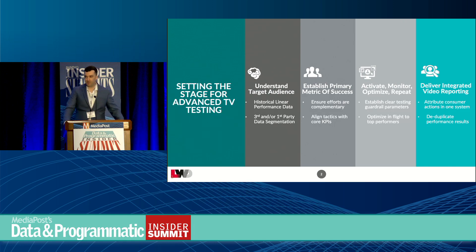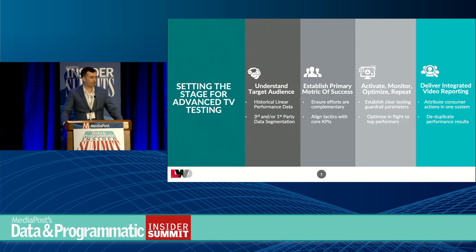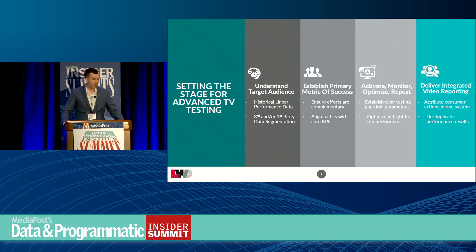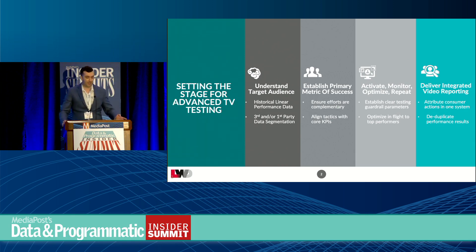Next, we look at third- or first-party data segmentation. A lot of what we've been focusing on is that CRM onboarding and focusing on the client data to find their specific audiences across different AVOD partners and different streaming partners, programmatically and direct. There's a lot of conversation around looking at what's worked historically and extending that into the advanced TV landscape, which we've seen great results with.